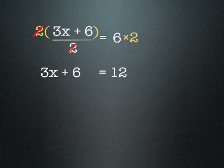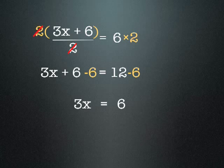Now we need to undo the plus 6. We do the opposite — we minus 6 from both sides of the equation. So 6 minus 6 cancels out, and 12 minus 6 is 6. So the next line of our equation looks like 3x equals 6. Now we need to undo the 3 times x, so we divide both sides by 3. Again, we have 3 on the top line and a 3 on the bottom line, which cancel out. 6 divided by 3 is 2, so x equals 2.